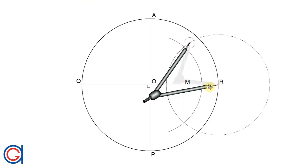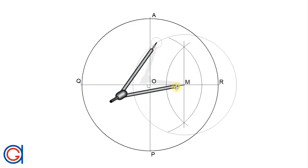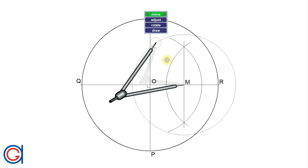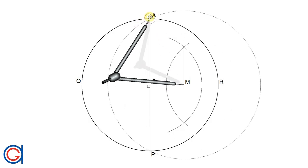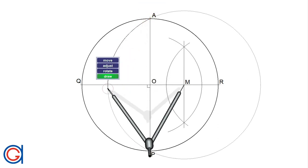Now, with our compass centered on M and radius MA, we scribe an arc to the left until it cuts our horizontal diameter QR. We will call this new point S.